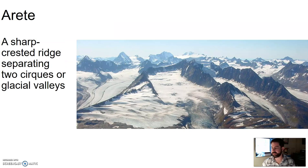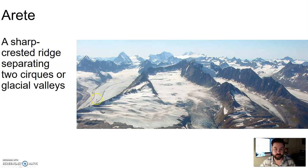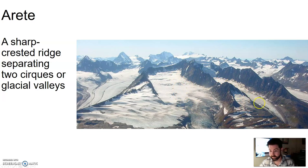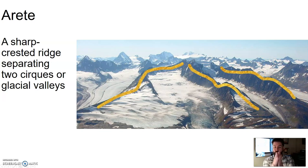Arêtes — I think it's a French term. An arête is a sharp, crested ridge separating two cirques or glacial valleys. For instance, here's a valley glacier and here's another valley glacier — what separates them is a sharp ridge called an arête. These valleys separated by sharp ridges are all arêtes. So it's a sharp ridge of rock separating valley glaciers or cirque glaciers.